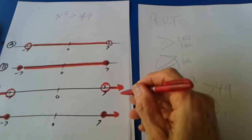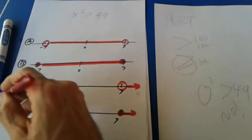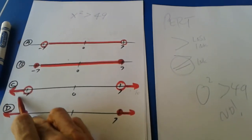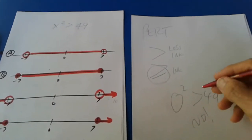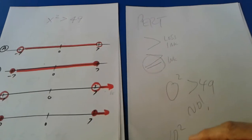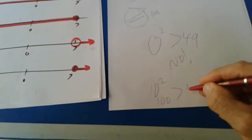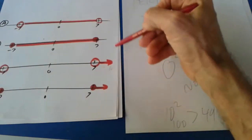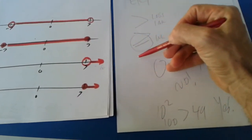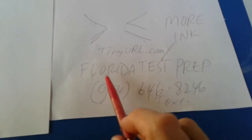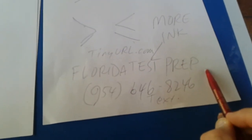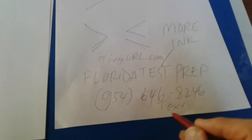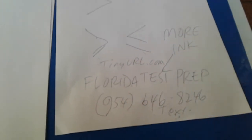An easy way to verify: 10 would be out here and negative 10 out here. Negative 10 squared is 100, which is bigger than 49. And 10 squared is 100, which is greater than 49 — yes, this is true. All of these numbers out here make this true. For more tips like this, go to tinyurl.com/floridatestprep — you can text any questions to me.